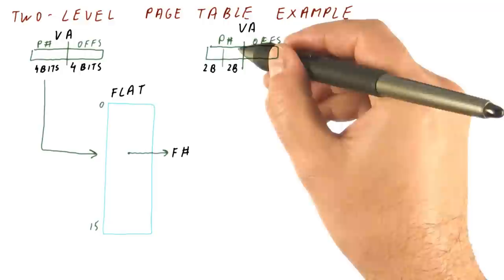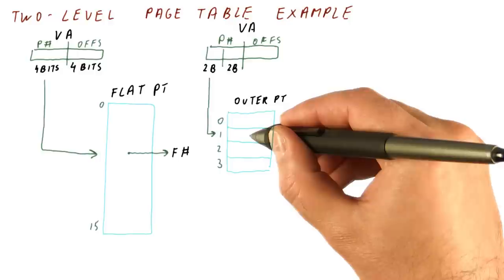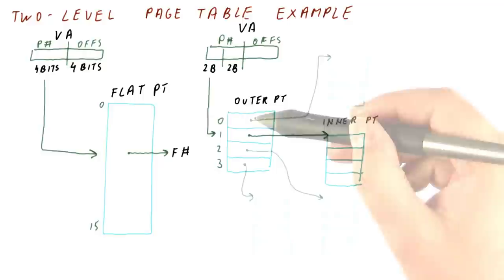The outer part of the page number is used to index into a four-entry outer page table, and each entry in this outer page table can point to a four-entry inner page table.